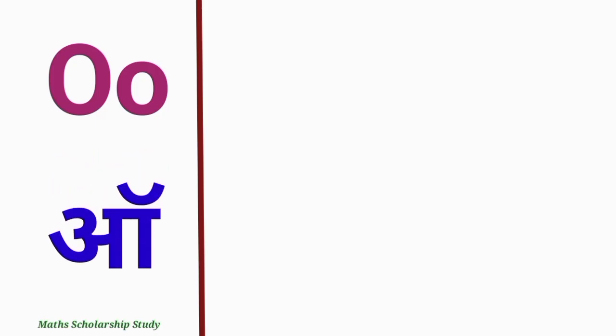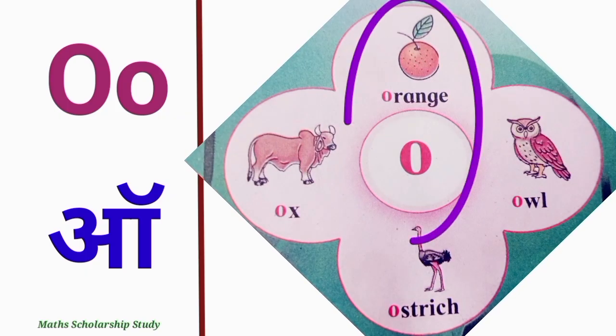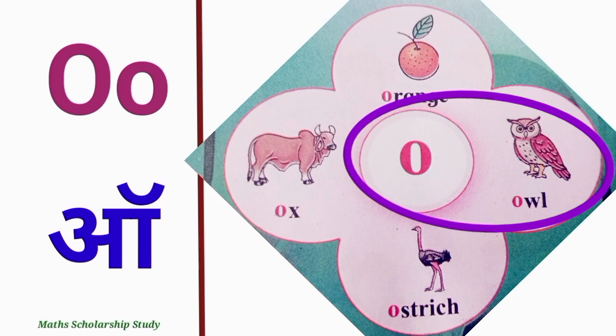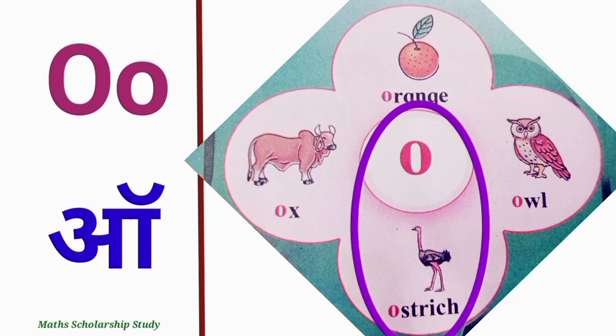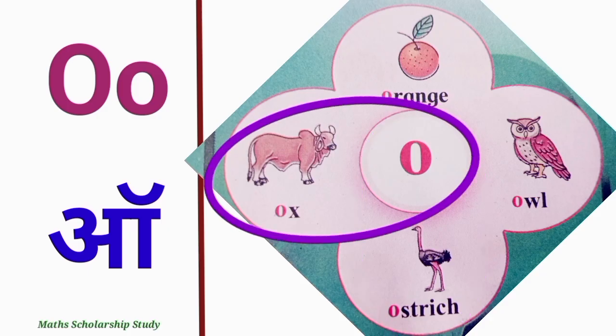Letter O. O says O. O for orange, O for owl, O for ostrich, O for ox.